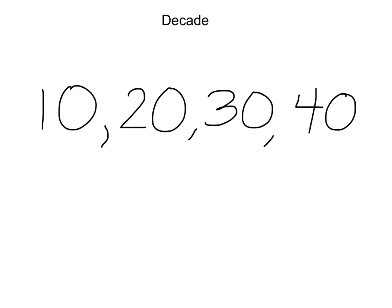The next word is decade. A decade is a set or series of 10. For example, 10, 20, 30, 40, and so on.